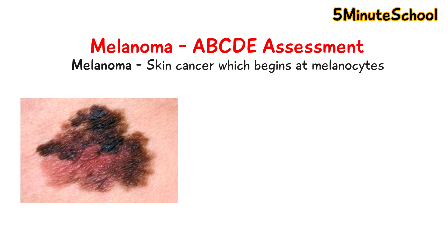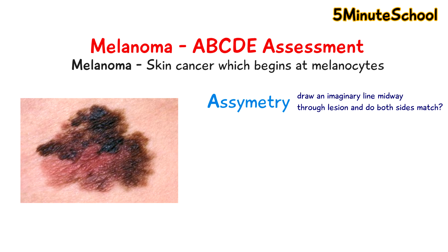When looking at skin lesions you take the ABCDE approach. The first letter is A, which stands for asymmetry. Melanomas in general are asymmetrical, so if you draw a line halfway through the lesion, one side won't match the shape of the other side. It's different to a typical spot or mole where they're even on both sides.